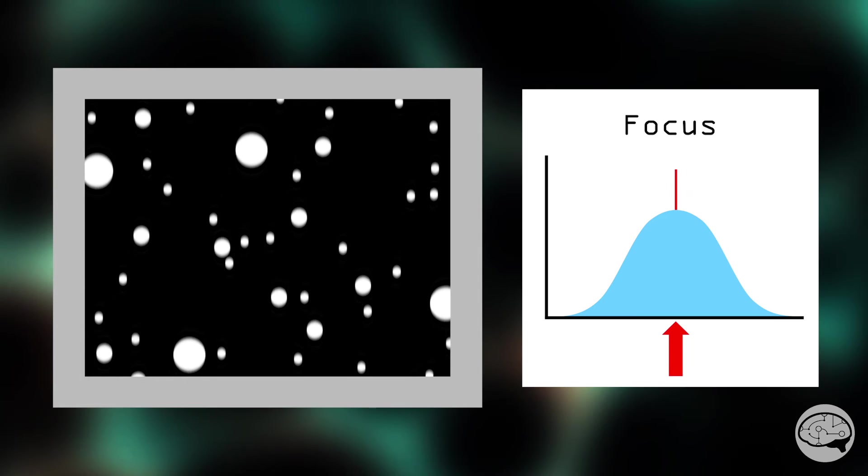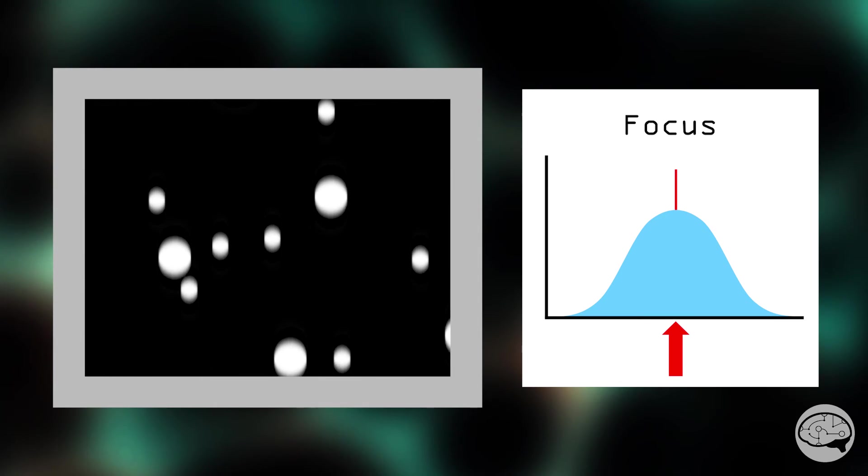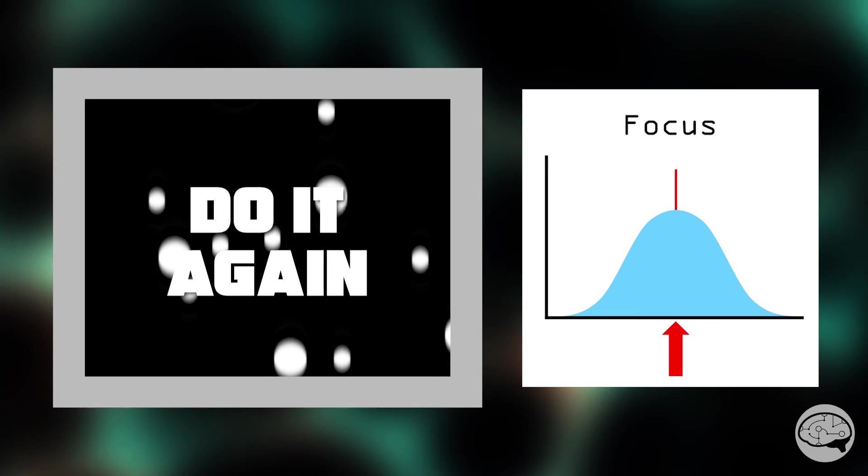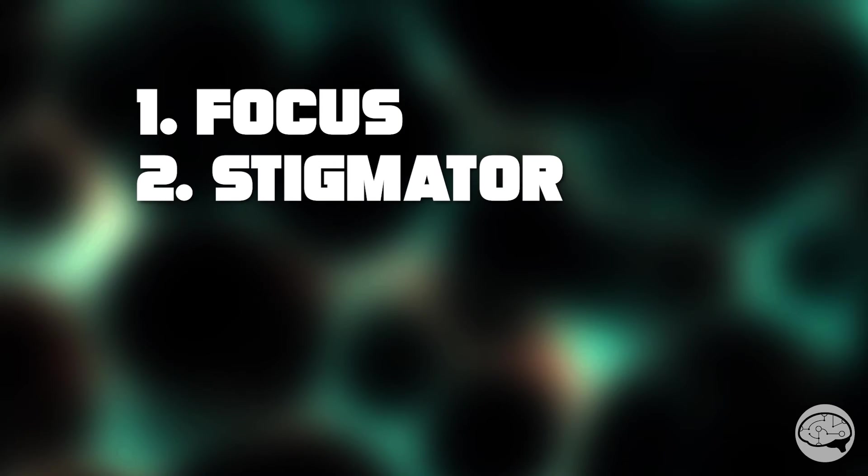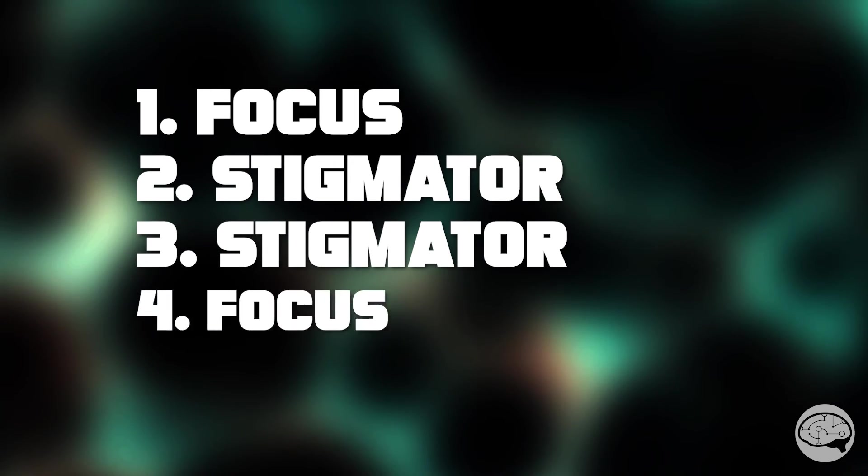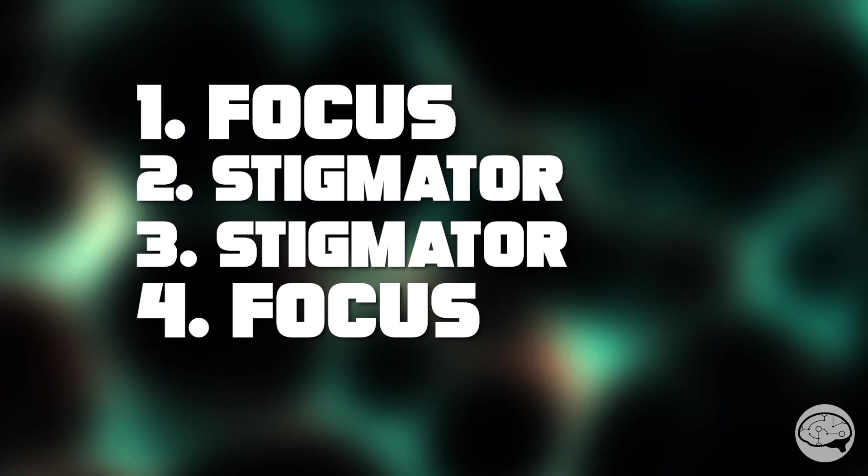If the image still stretches a little bit, then what we might do is go up in magnification a bit, and repeat the procedure until all stretching is eliminated. But this is the order we need to go in. Focus, one stigmator, the other stigmator, and then focus again. We always start and end with focus.